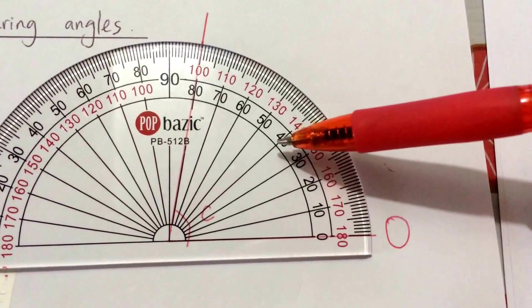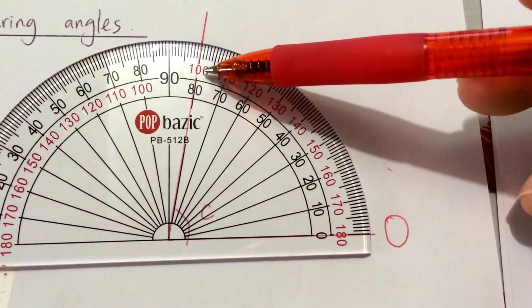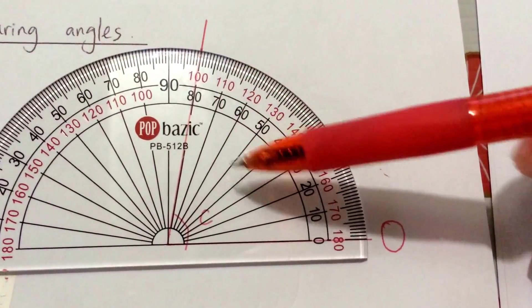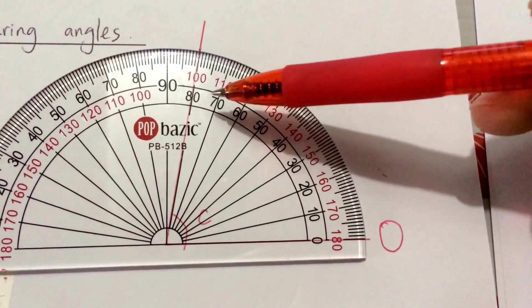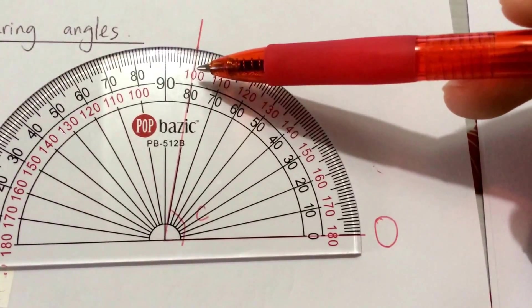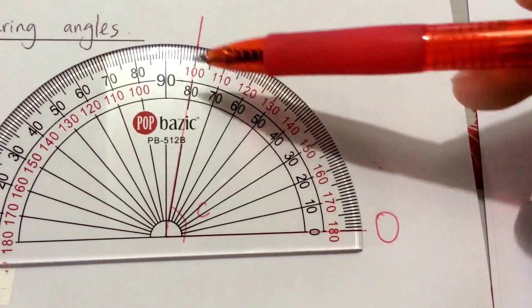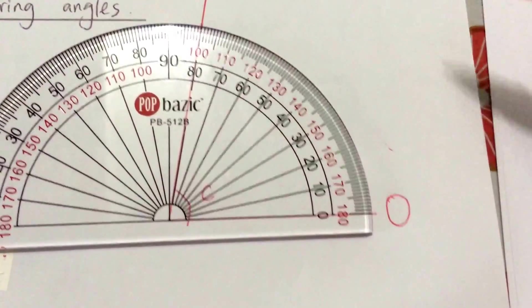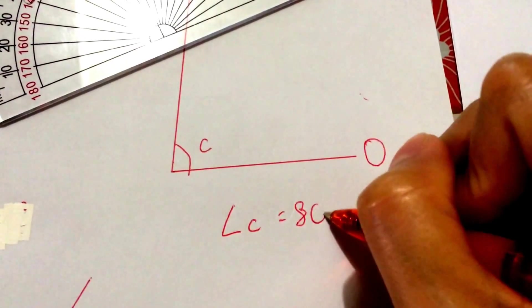0, 10, 20, 30, 40, 50, 60, 70. Is it 80 or is it 100? It's not 100 because 100 is the outer scale. Remember for this one we use the inner scale. So 0, 10, 20, 30, 40, 50, 60, 70, 80. The inner scale shows 80. When you use the inner scale, you only look at numbers on the inner scale — you ignore all the numbers on the outer scale. So this angle is 80 degrees. Angle C is 80 degrees.